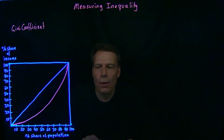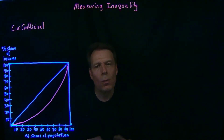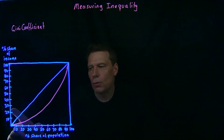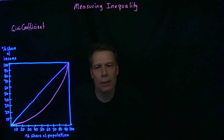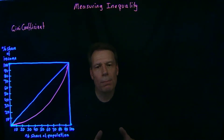Now we could look at this and ask, what would this curve look like for a country that has a perfectly equal income distribution, where income is evenly distributed between everybody? Well, in that case, the lowest 10% of the income distribution would earn 10% of total income. The lowest 20% would earn 20% of total income. The lowest 30% would earn 30% of total income, and so forth. So this income distribution would then lie on the diagonal, which would represent a perfectly equal society.